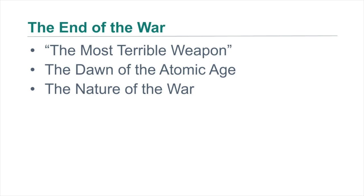In the 1944 presidential election, Roosevelt defeated Thomas E. Dewey, Republican governor of New York, winning an unprecedented fourth term. But FDR died on April 12, 1945, before the Allies secured victory. His successor, Harry S. Truman, immediately faced an extraordinary decision: whether to use the atomic bomb against Japan. Truman was told by the Secretary of War that the United States had built the most terrible weapon ever known in human history.